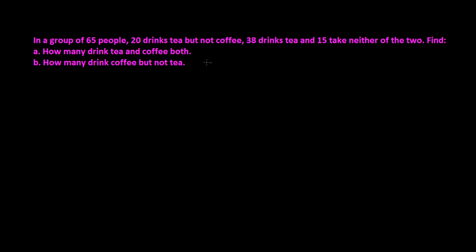Let's solve another word problem of set theory. In a group of 65 people, 20 drink tea but not coffee — that is T difference C — and 38 drink tea, meaning the total number of people who drink tea. 15 take neither of the two, meaning neither coffee nor tea. We need to find how many drink tea and coffee both — that is T intersection C — and how many drink coffee but not tea — that is C difference T.